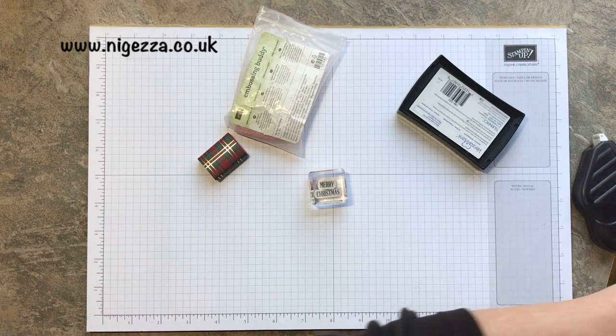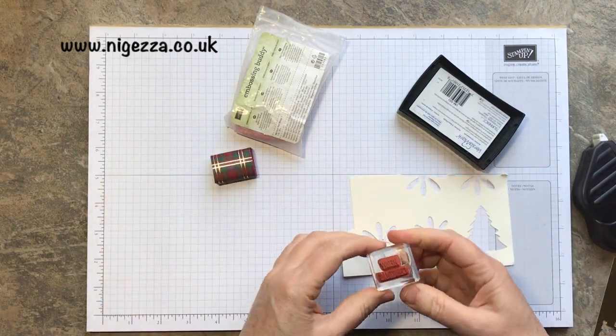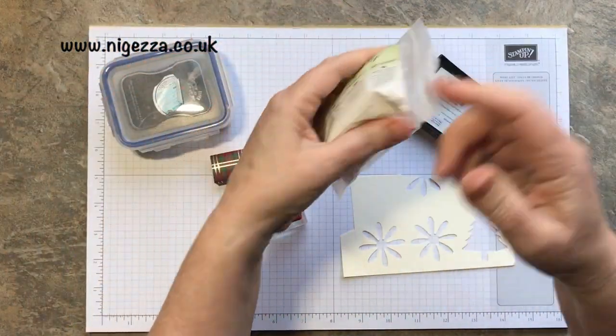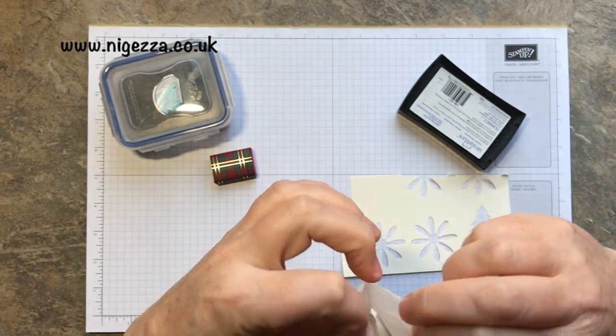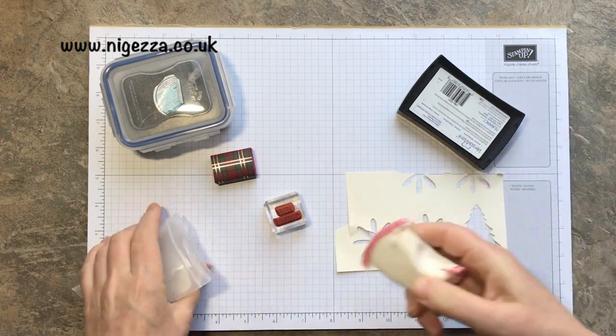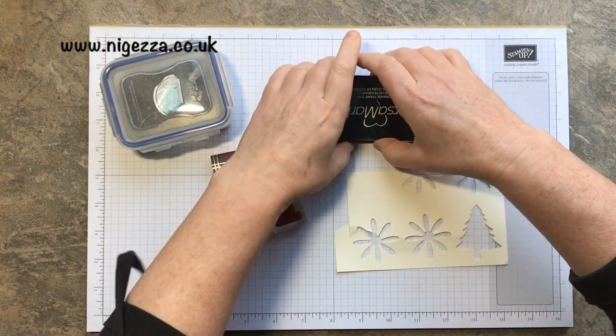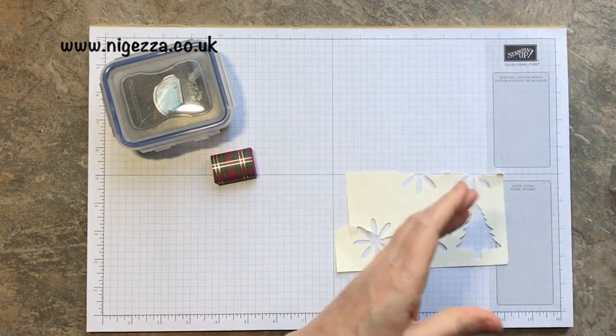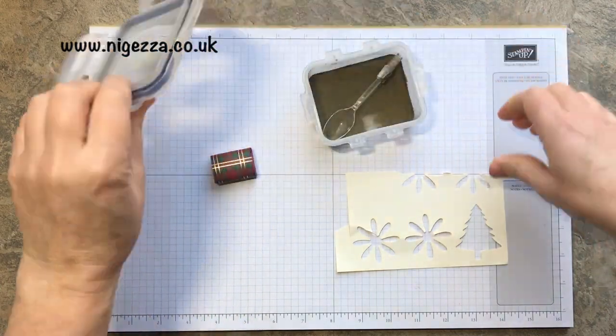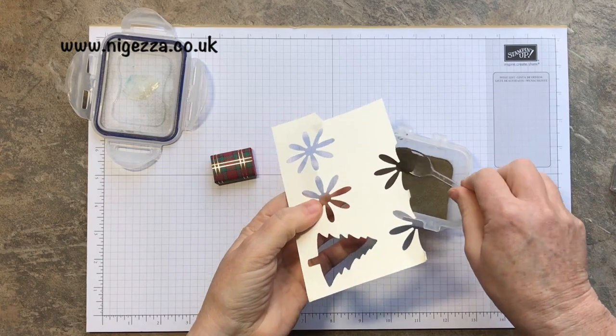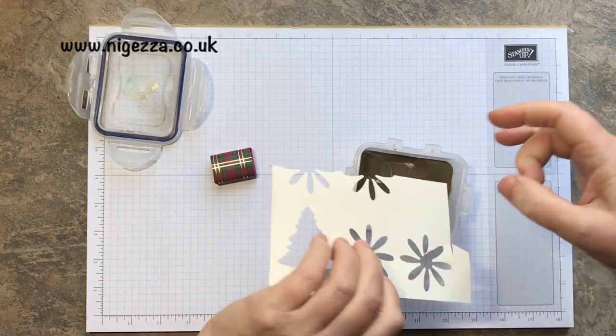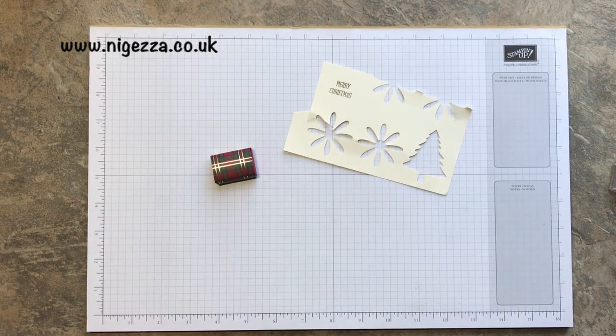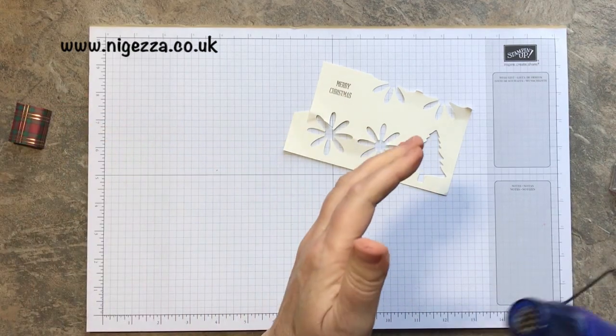I love this stamp set - it's one of the reasons I bought it. I'm using Very Vanilla cardstock because I'm putting gold foil behind it. I'll use my embossing buddy, then put Versamark on there and gold powder. Now we'll heat that up and watch the magic happen. It's going to get noisy. Move that out of the way - don't want to melt my Hershey.